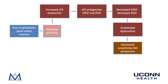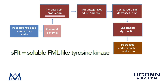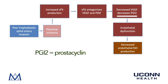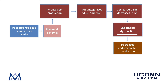Placental ischemia leads to an increase in sFlt1 production. sFlt1 is a truncated form of the vascular endothelial growth factor receptor Flt1, making sFlt1 a competitive inhibitor of the VEGF receptor. sFlt1 therefore antagonizes vascular endothelial growth factor (VEGF) and also antagonizes placental growth factor (PlGF). Decreases in VEGF also lead to a decrease in prostacyclin, which has important anti-inflammatory actions. This decrease in prostacyclin leads to endothelial cell dysfunction and therefore decreased endothelial production of nitric oxide.